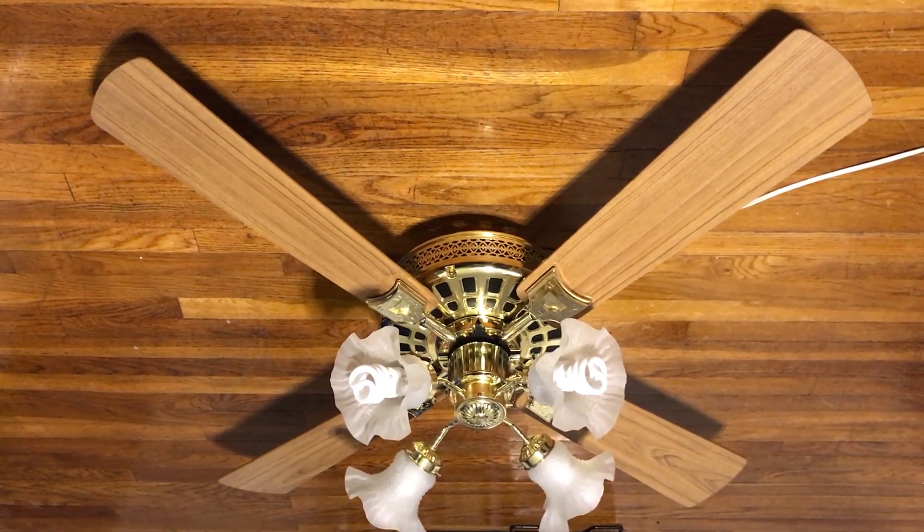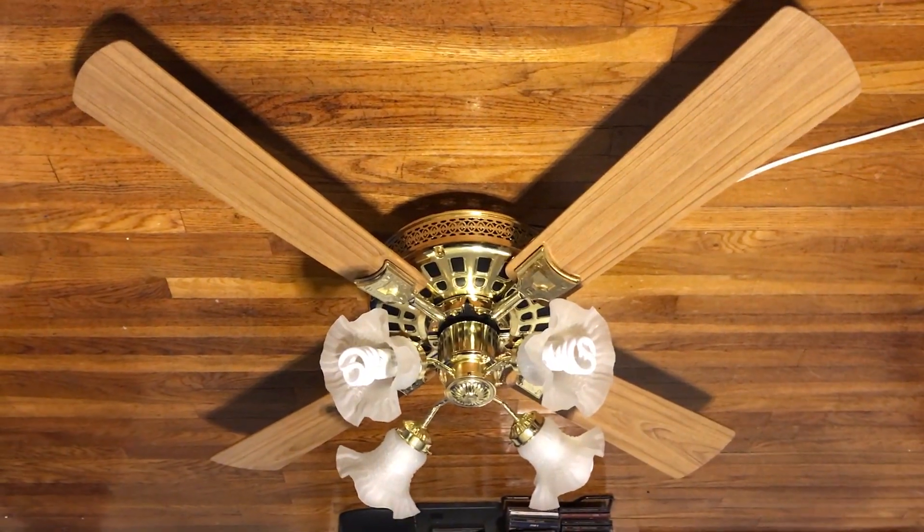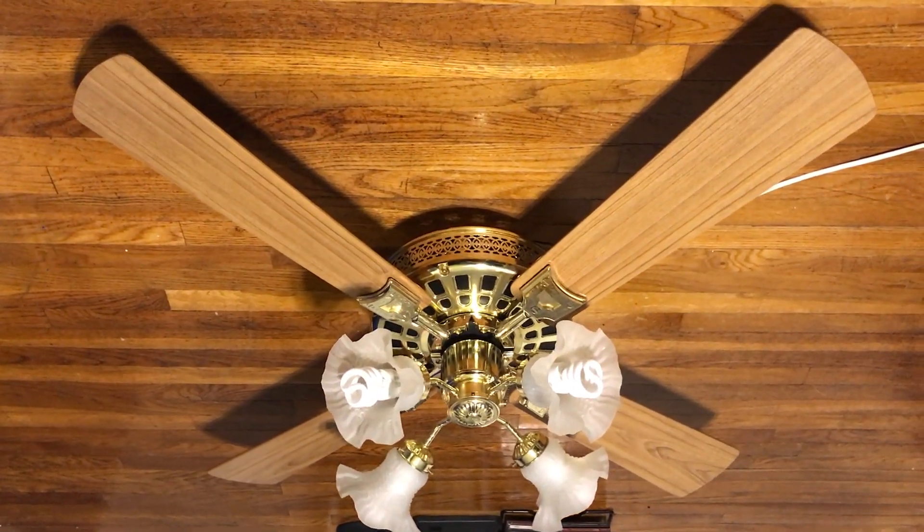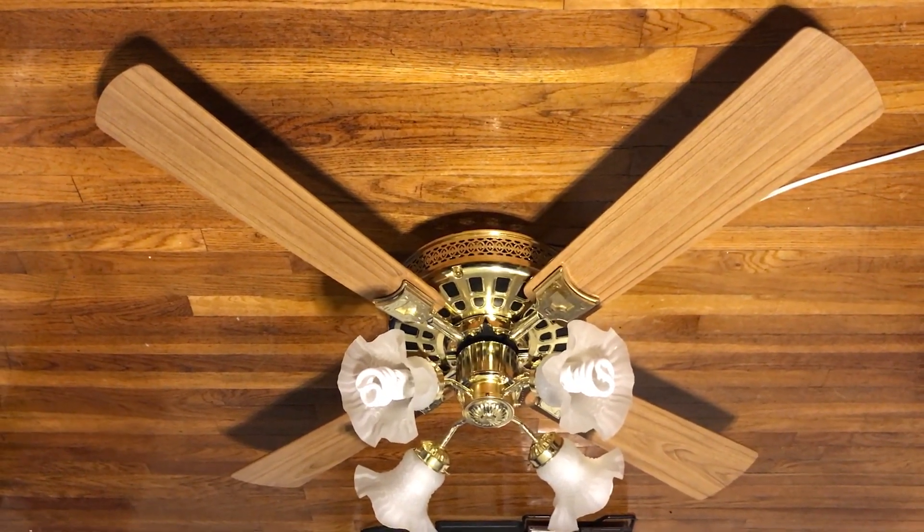Alright, what you see here is a NuTone Veranda 2 ceiling fan in polished brass. I got this from Randy C. Johnson. It's a pretty tone ceiling fan, it's basically a transitional model between the Veranda 2X and the Veranda 2.